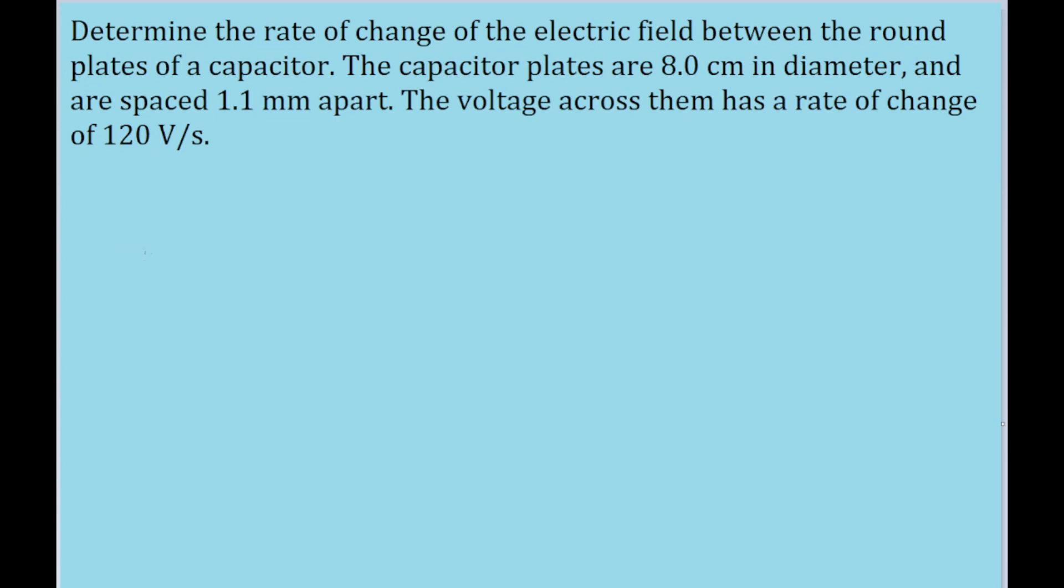First of all, the formula for the electric field between two capacitors is E = V/d. It's equal to the voltage difference between the two plates divided by the distance between those two plates. You may notice that the diameter of the plates is a bit of a red herring, since the electric field has nothing to do with the diameter, just the distance between them.